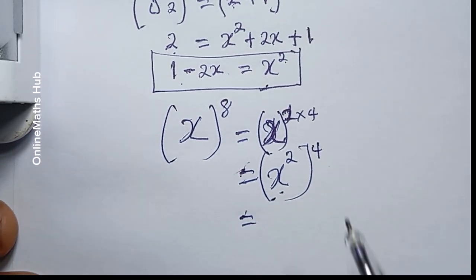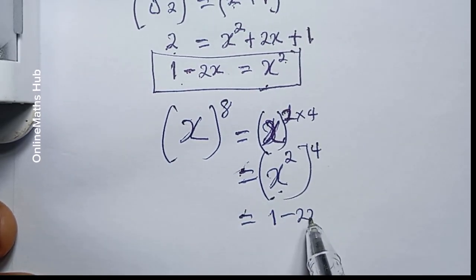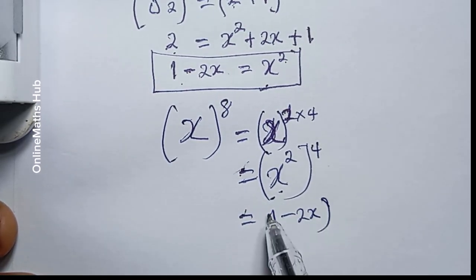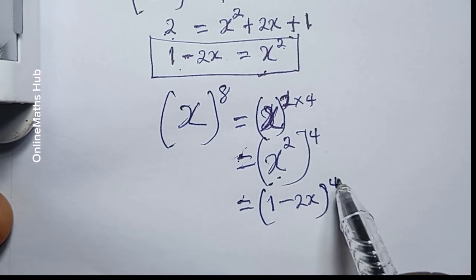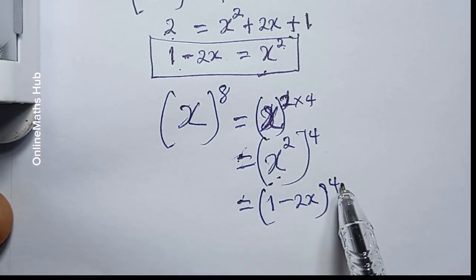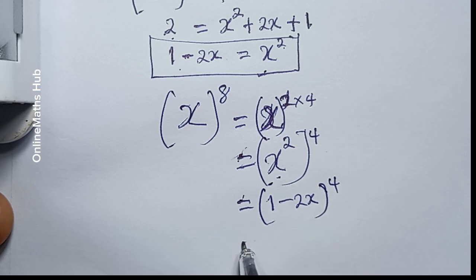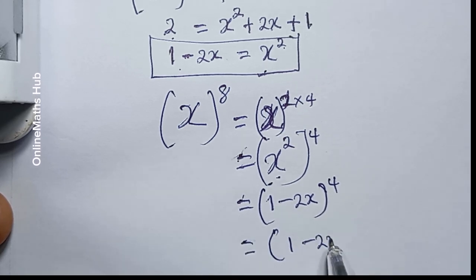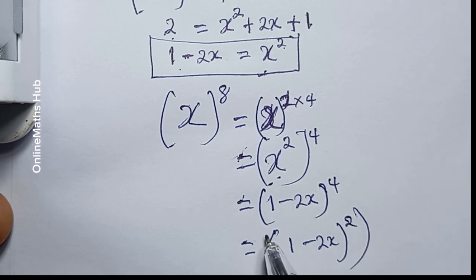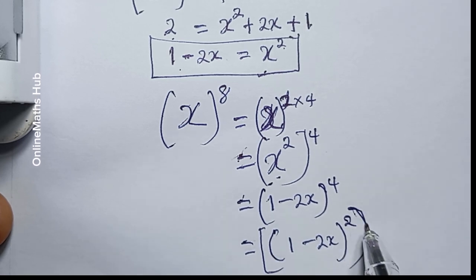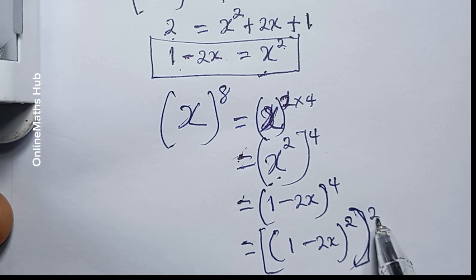So what I'm having is (1 minus 2x) all raised to power 4. Next I will also split this power 4, so I can write this as (1 minus 2x) all raised to power 2, and then that whole thing raised to power 2 again — because 2 times 2 gives you 4.